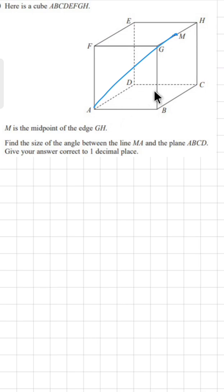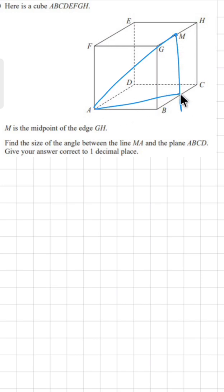To find the angle between MA and the floor, we are going to draw a perpendicular here — it will come at the midpoint of BC, assume it to be P. Now join A and P. The angle between MP and AP is 90 degrees because AP is horizontal and MP is vertical. We need to find angle MAP. Do we know the value of MP? Yes, MP equals HC, which is x. Do we know AP? No.